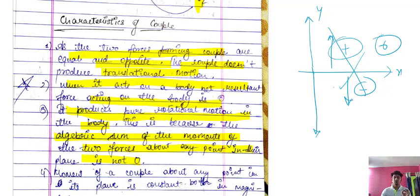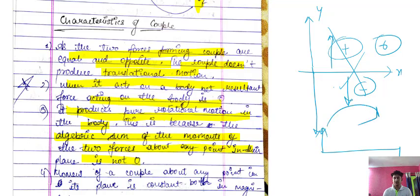The moment of the two forces about any point in the plane is not zero — it is not zero. Suppose this is a beam: one force is downward and one is upward. This is producing a clockwise moment and the other is also producing a clockwise moment. So the resultant is the algebraic sum of moments.